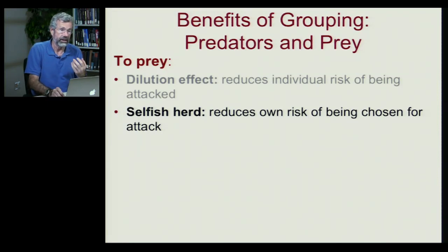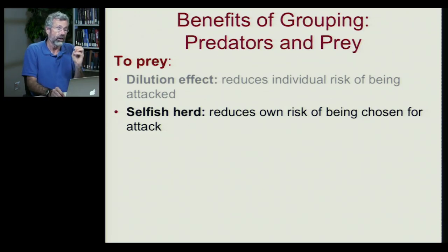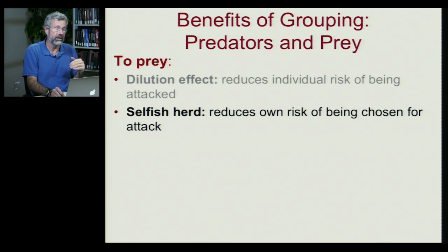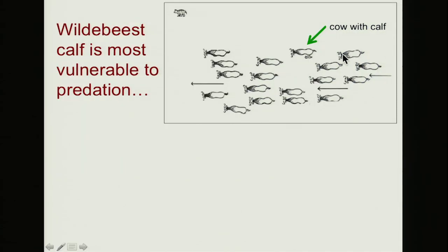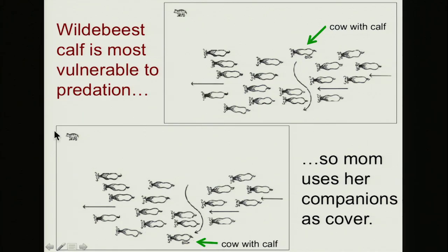Another advantage from living in groups is called the selfish herd, where individuals don't just rely on safety in numbers, but actually behave in a way that reduces their individual risk of being chosen by the predator. For example, a wildebeest cow with a vulnerable calf will put herself on the opposite side of the herd from the predator, so there's a chance the predator won't see her. She uses her companions as cover.